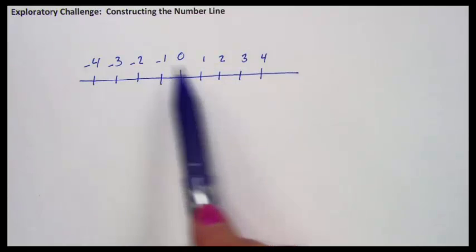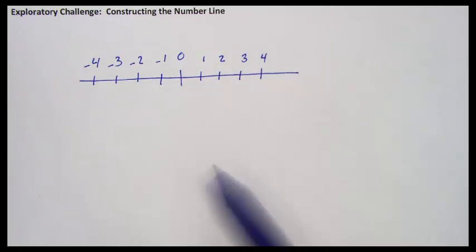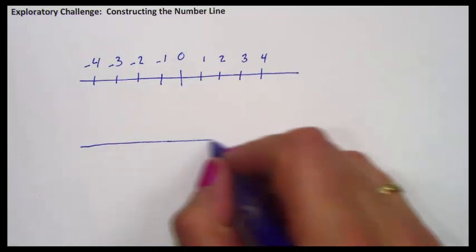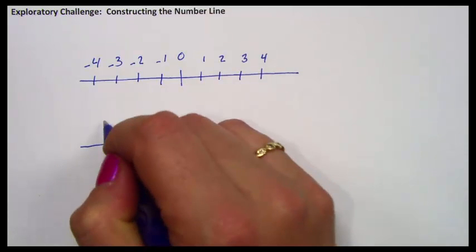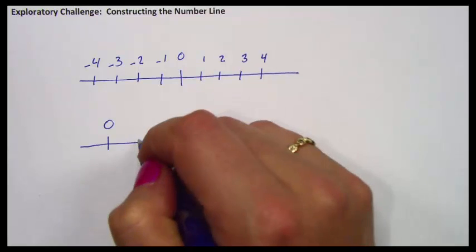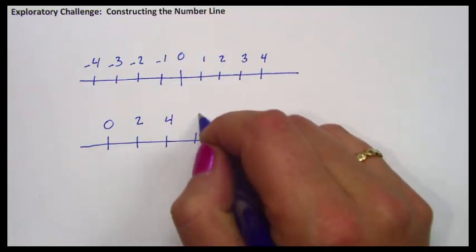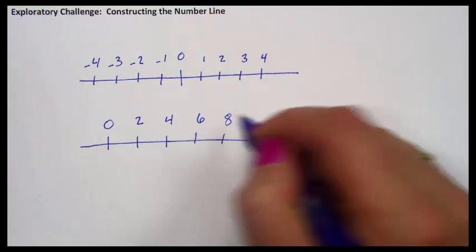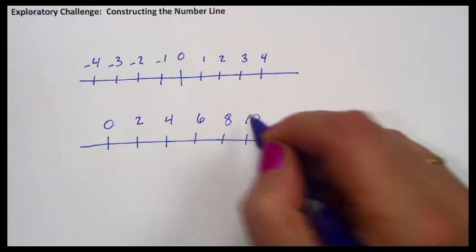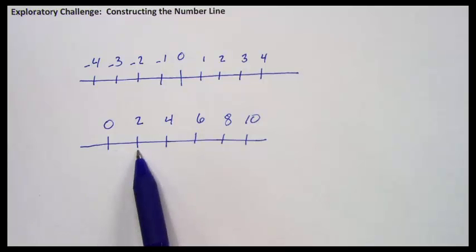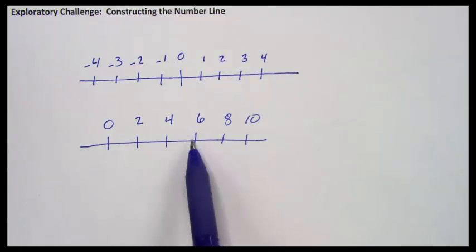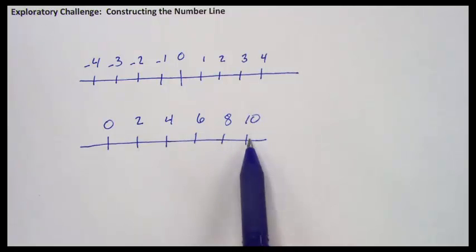Now I don't have to count by ones. I could count by twos. If I wanted to put zero on the left, I could count two, four, six, eight, and so on. You can see that the distance between zero and two is nearly the same as the distance between two and four, four and six, six and eight, eight and ten. It doesn't have to be exact, but you're looking for a very similar distance.